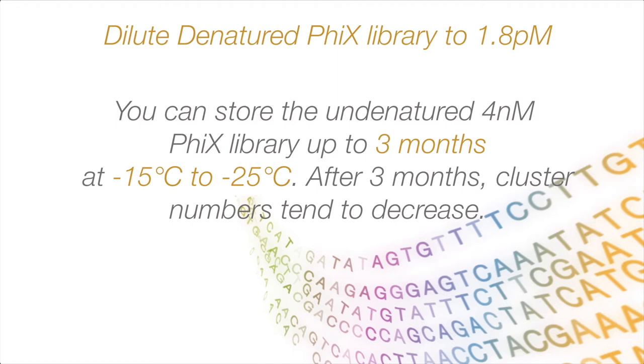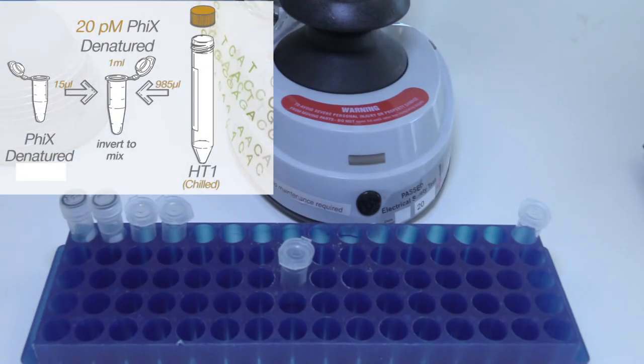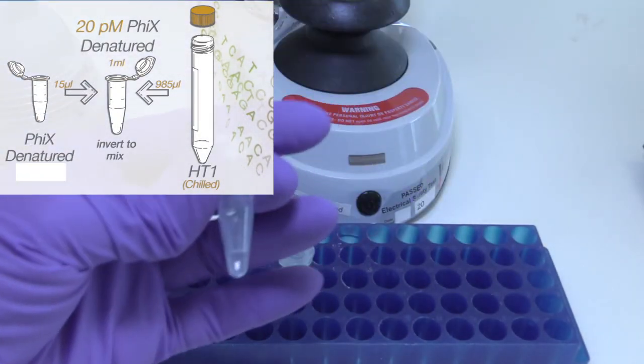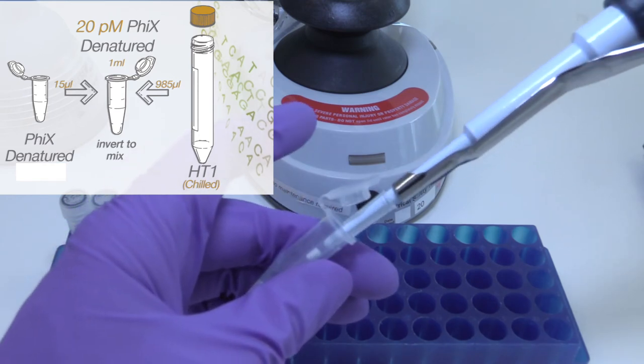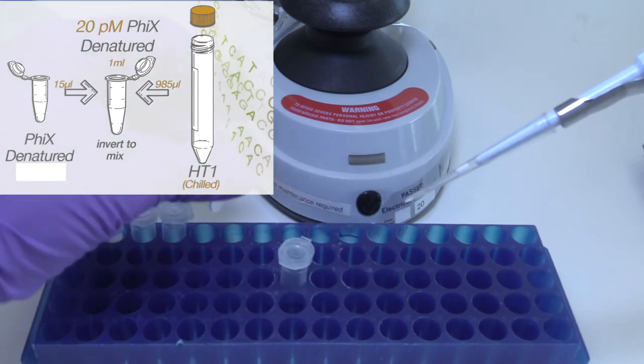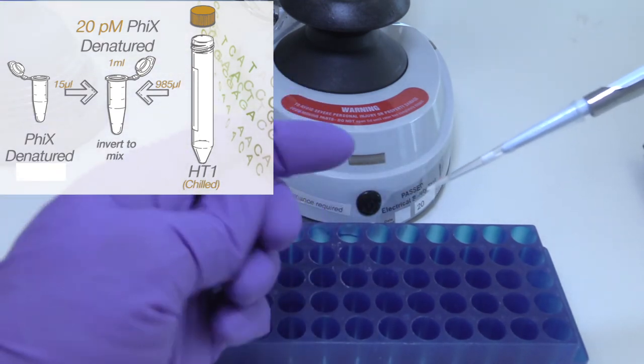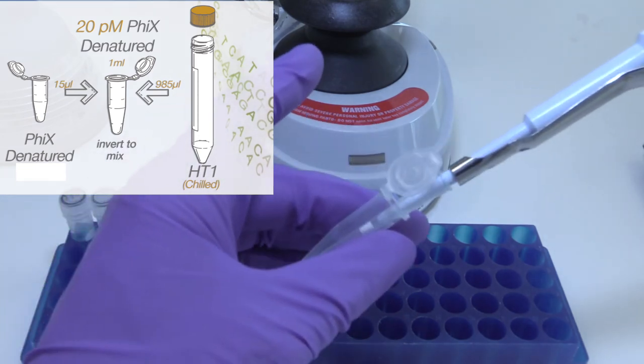Following next is diluting the denatured Phi-X to the desired loading concentration. Add 985 microliters of pre-chilled HT-1 to the tube of denatured Phi-X. The total volume in the tube is now 1 milliliter at 20 picomolar.